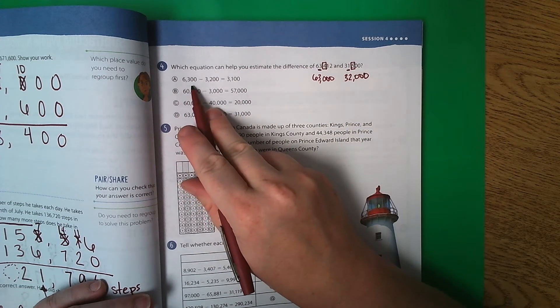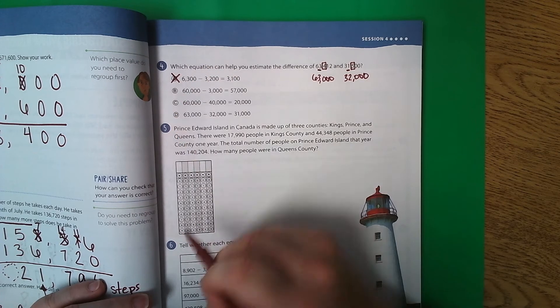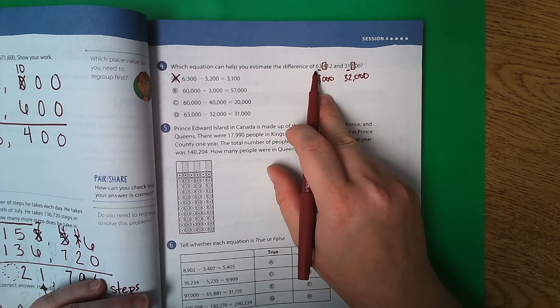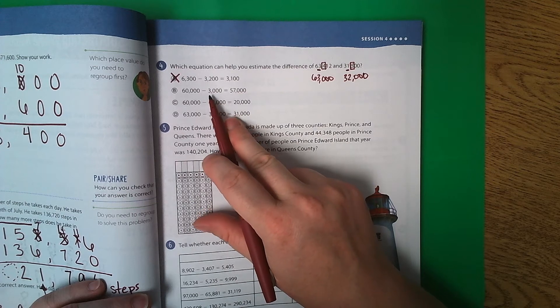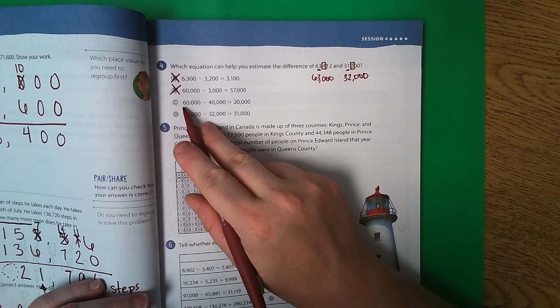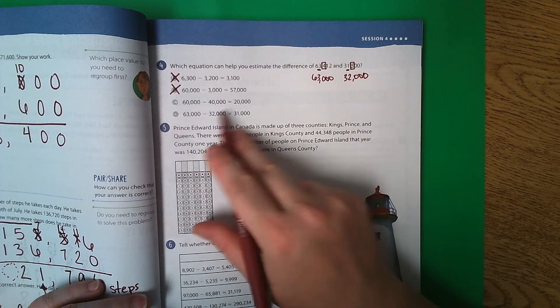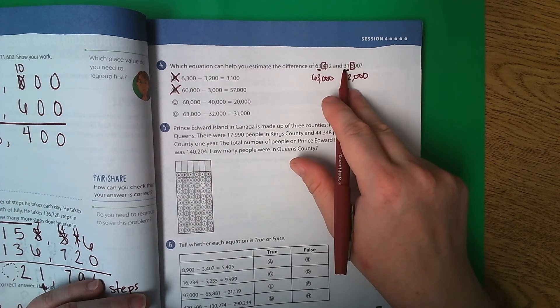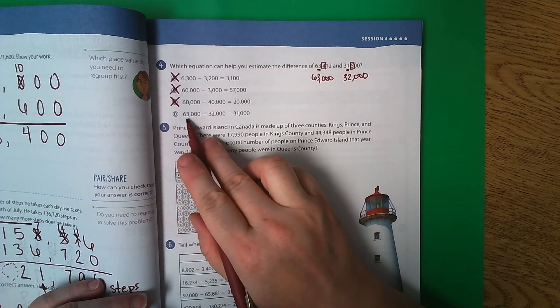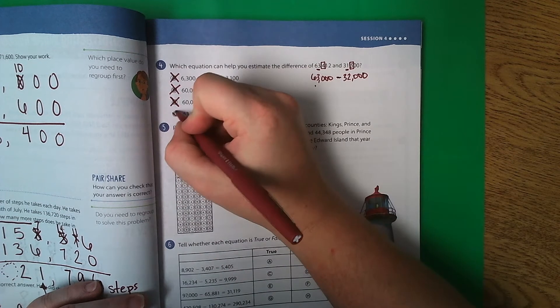So first of all, let's look at A. A only goes up to the thousands, but these both have numbers in the 10,000s. So we know it can't be A. B has 60,000, so maybe they rounded to the 10,000s place. But look at this one, this one only has up to the thousands, and again, we have a number in the 10,000s. So we know that this one cannot be correct. C, it looks like again they rounded to the 10,000s place. So if we rounded to the 10,000s place, then we would get 60,000. But over here, 40,000. The 1 does not tell the 3 to go up. The 1 would tell the 3 to stay the same. So that one can't be it. And then down here on D, 63,000, which is what we got, minus 32,000, which is also what we got. So it looks like D is our answer.